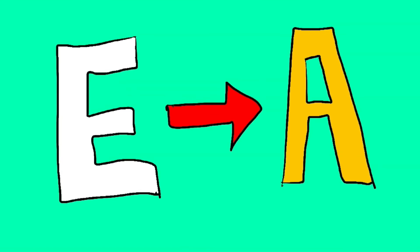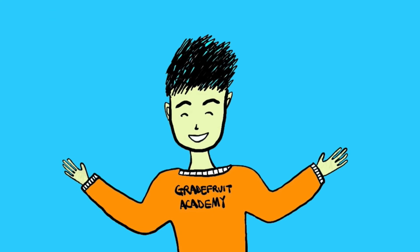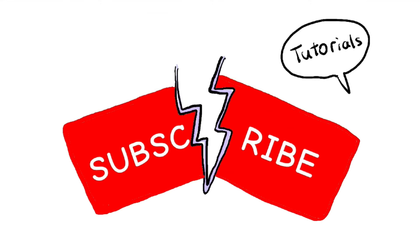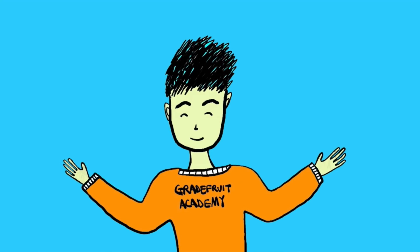So those are the 8 strategies that pushed me from an E to an A in H2 Chemistry during my A levels. No doubt, it has been a long, arduous and painful journey for me and if you're a junior college student right now, I totally feel your pain and hopefully this video can help you in a way or another. If you found this video useful, don't forget to like, comment and subscribe so that you won't miss out on more tutorial study advice videos just like this. All the best to everyone out there, don't give up and press on. This is Grapefruit Academy and I'll see you in the next video.